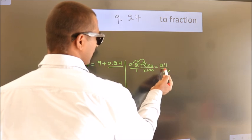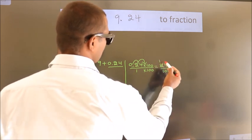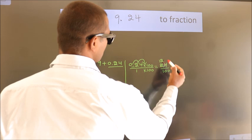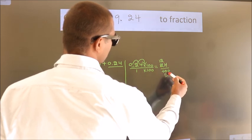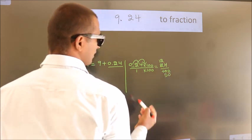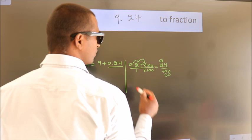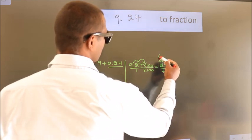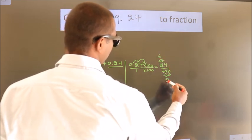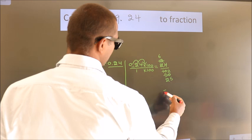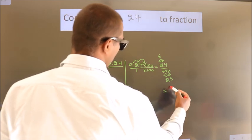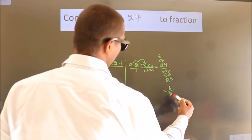I now cancel with 2. 2 ones, 2 twos, 2 fives. This zero as it is down. I cancel with 2 again. 2 sixes, 2 twenty-fives. So the fraction we got is 6 by 25.